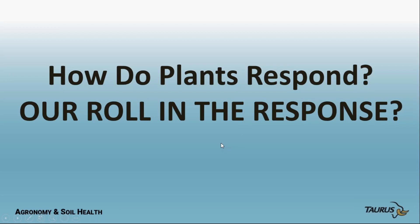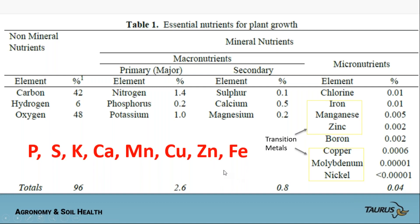How do plants respond and what is our role in the response? These are the tools we have for nutrients and stress management. The key ones are phosphorus, sulfur, potassium, calcium, manganese, copper, zinc, and iron. These transition metals are key simply because they can deal with electrons through the shifting of their valences, acting as catalysts to bring about a reaction that nullifies the effect of reactive oxygen species. Phosphorus is needed as energy for every reaction, and boron is needed for many things, but not specifically for dealing with ROS as far as we know.